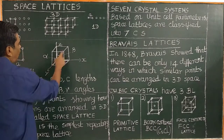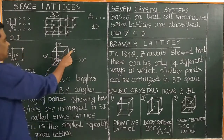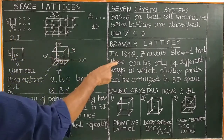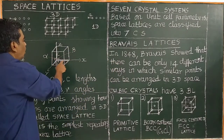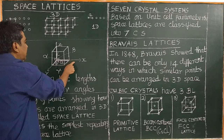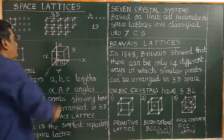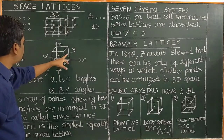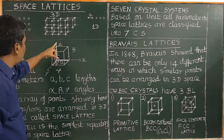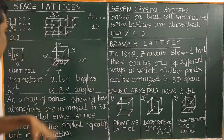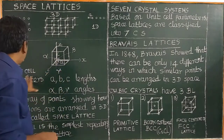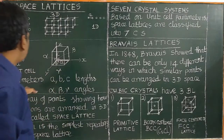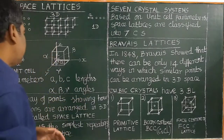The y-axis is opposite to angle alpha. The angle between the x-axis and z-axis is beta. The angle opposite to the z-axis is called gamma. There are six unit cell parameters to describe a three-dimensional unit cell.